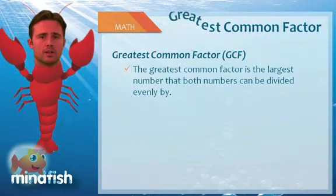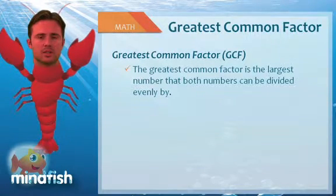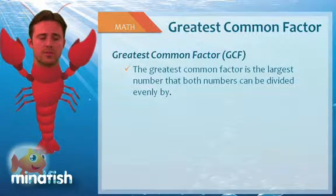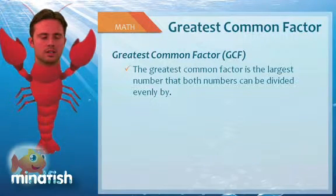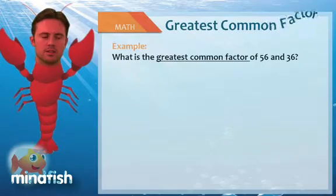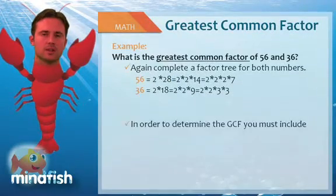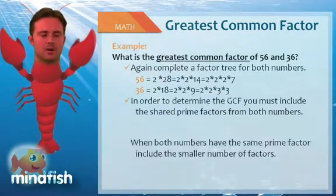Greatest common factor questions are kind of the opposite from least common multiple in the sense that we're looking for the largest number that goes into both numbers. So again, we need to do a factor tree for both 56 and 36 to do this. But now we're looking for the least amount of overlap.